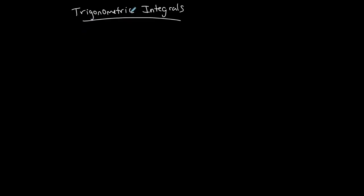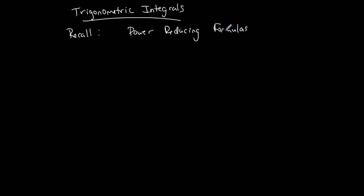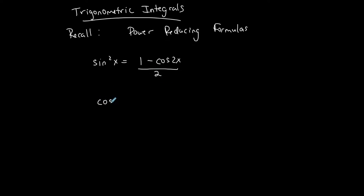Here's another situation with trigonometric integrals. For these types of examples, I want you to recall the power reducing formulas from trig. Not everybody goes through these in trig, but they're not difficult. I'm taking a sine of degree 2 and converting it into a cosine of degree 1, same thing with cosine squared — that's why they're called the power reducing formulas. We're going to use these two formulas because we're going to focus on sine and cosine.